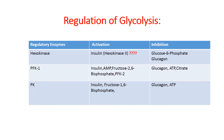For regulation of glycolysis, remember the mnemonic HP1 printer. Hexokinase-2 is affected by insulin; inhibited by glucose-6-phosphate and glucagon. PFK-1 is activated by insulin, AMP, and fructose-2,6-bisphosphate; inhibited by glucagon, ATP, and citrate via PFK-2. Pyruvate kinase is activated by insulin and fructose-1,6-bisphosphate; inhibited by glucagon and ATP.